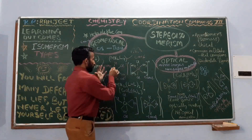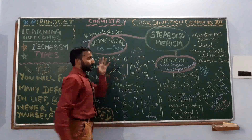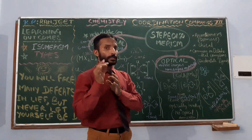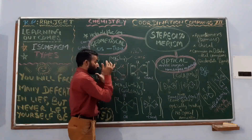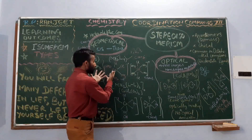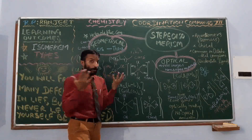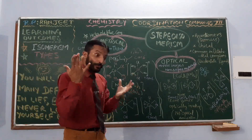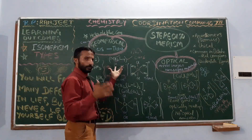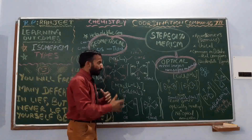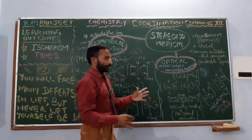For coordination number 6 with formula MA₄X₂, cis is identified according to the position of the X₂ ligand — the ligand present in minimum amount. In the cis isomer, the two X ligands (chlorine) are adjacent to each other. In the trans isomer, the chlorine ligands are diagonally opposite. So we use the ligand present in minimum amount to identify cis and trans.